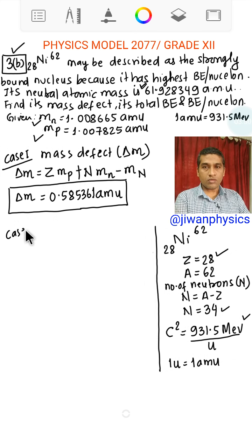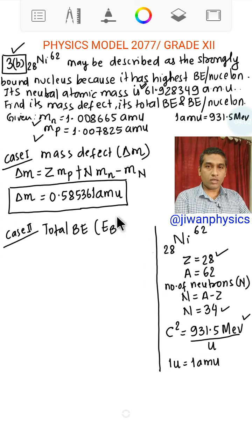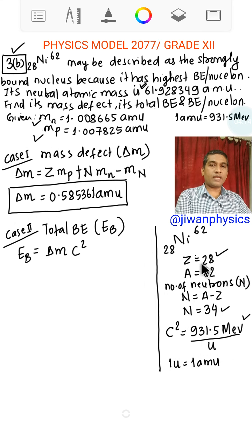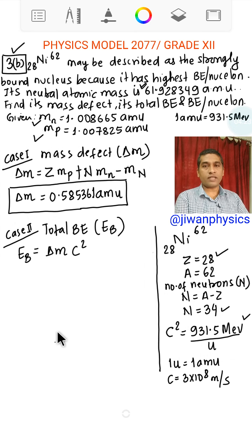Now case 2, total binding energy. Let us denote it by the symbol EB. Total binding energy equals delta M times C squared. And here C is the speed of light, 3 times 10 to the power 8 meter per second.